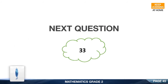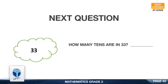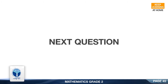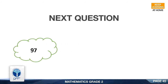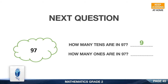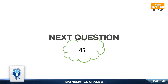Next question: How many 10's are in 33? Good, it is 3. How many 1's are in 33? Good, it is 3. Next question: How many tens are in 97? Good, it is 9. How many ones are in 97? Good, it is 7.